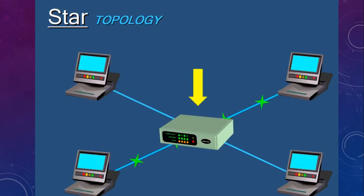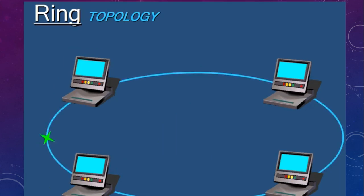Another topology is star topology, where there is a hub at the center. All machines are connected to this hub to provide connectivity. However, this hub is a single point of failure — if the hub fails, there will be no connectivity to any machine. All data sent goes through this hub.